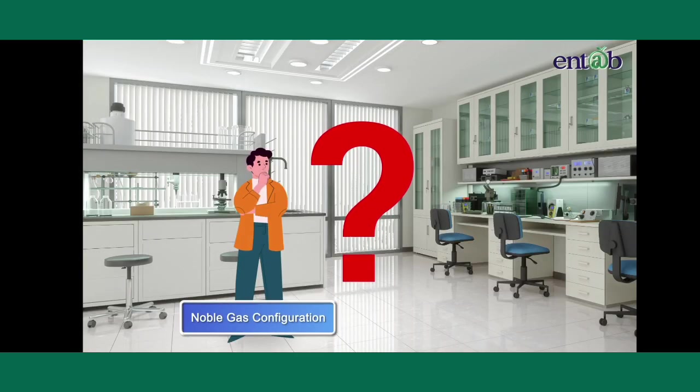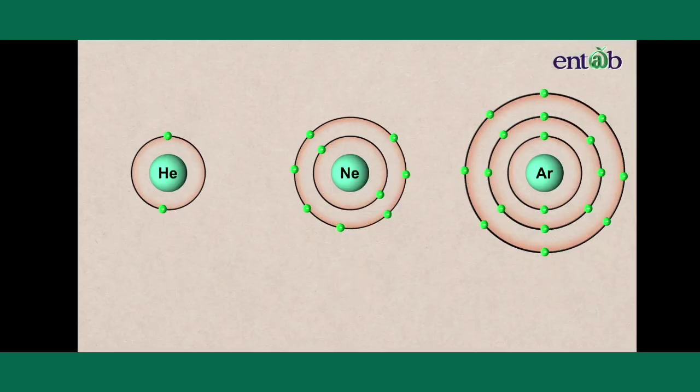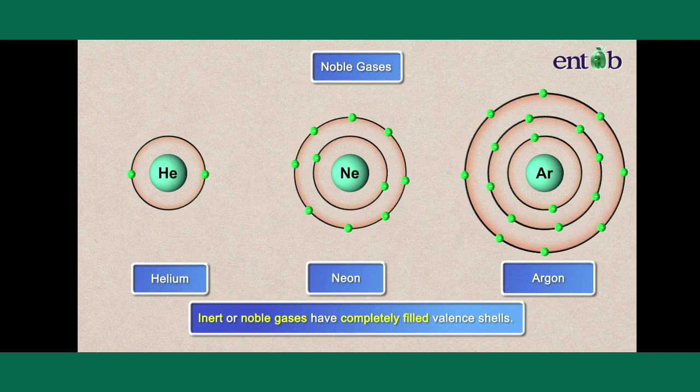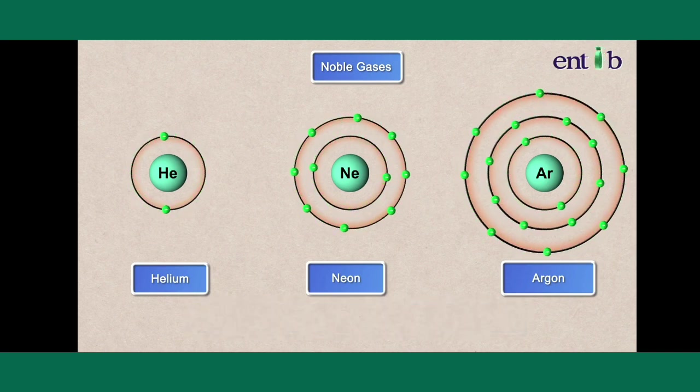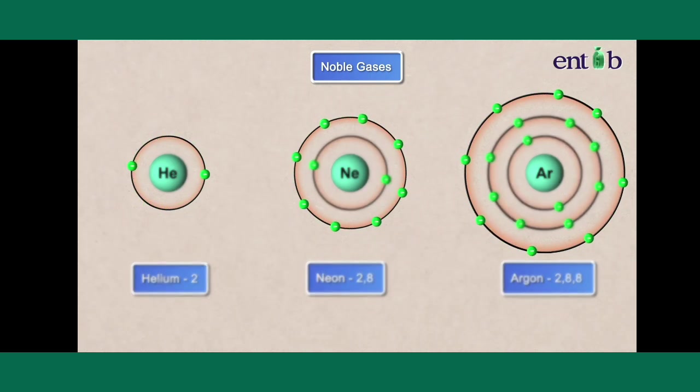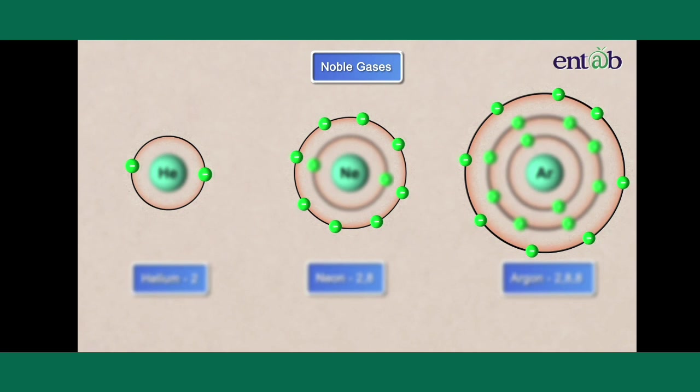What do you understand from the phrase noble gas configuration? Noble gases have a completely filled valence shell. Thus, attaining a noble gas configuration would mean having a completely filled valence shell.